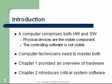Introduction. A computer comprises both hardware and software. The hardware is physical — that's what we can see and touch. The software is the controlling instructions; we can't see it. It's in the form of instructions that reside on the hard drive. Computer technicians need to master both, though software is something we're really going to focus on. Chapter 1 provided an overview of the hardware; Chapter 2 introduces the critical system software.